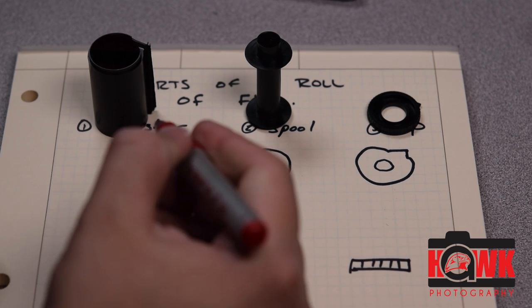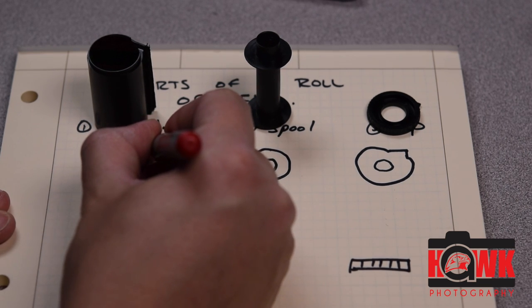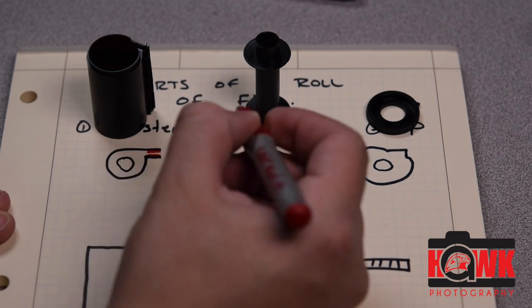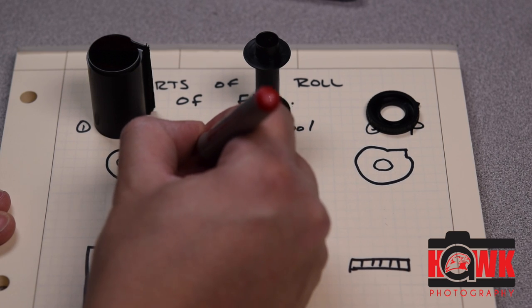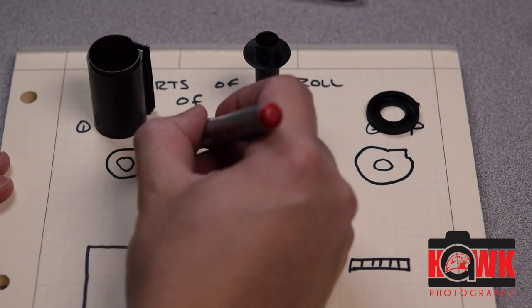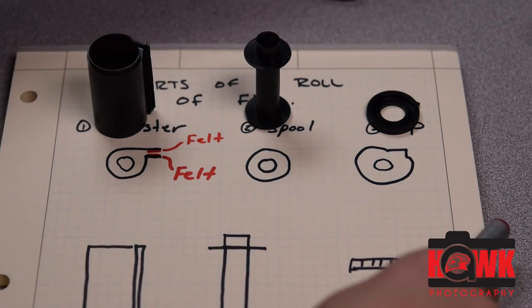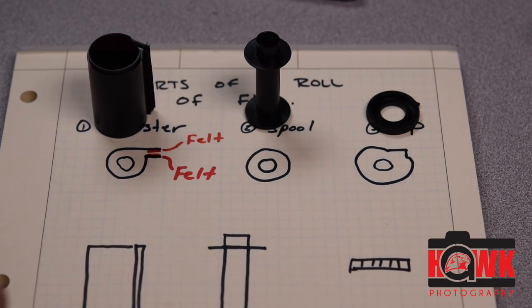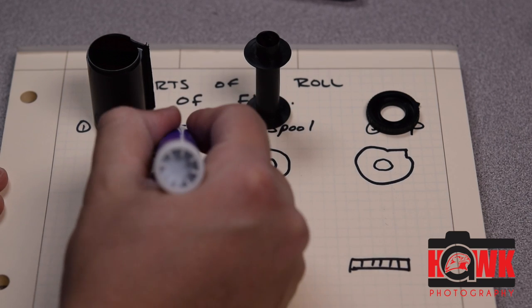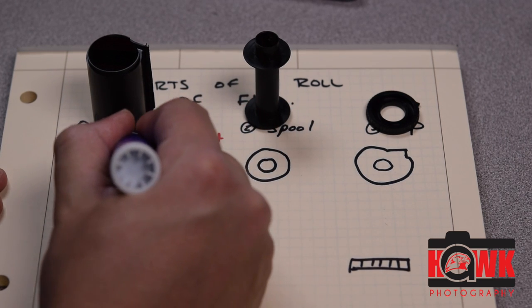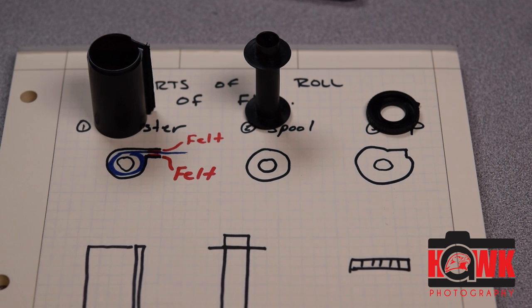We go ahead and label where those little pieces of felt are. There's one strip there, and there's one strip there. And I just refer to that as the felt. There's two pieces of felt, top and bottom. And eventually our film will go between those two pieces and spool into our canister just like that.